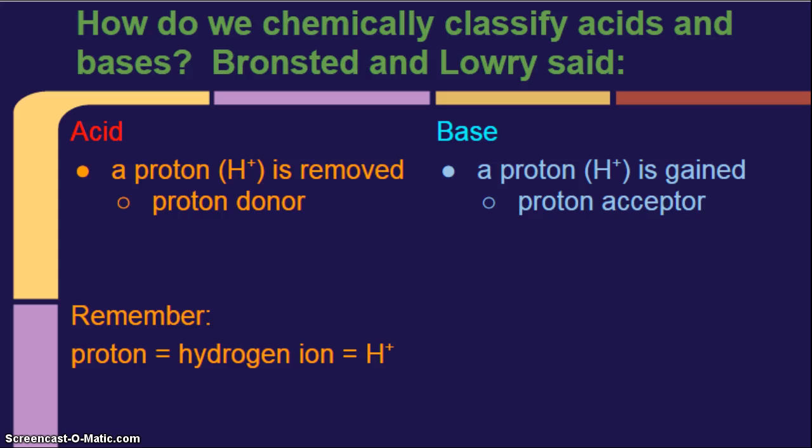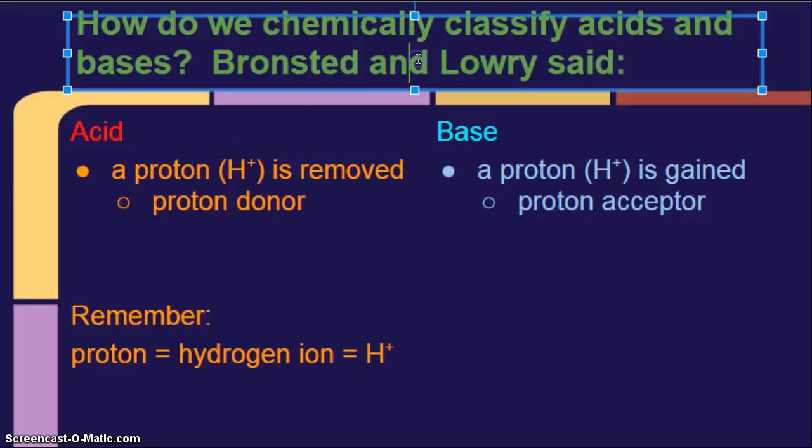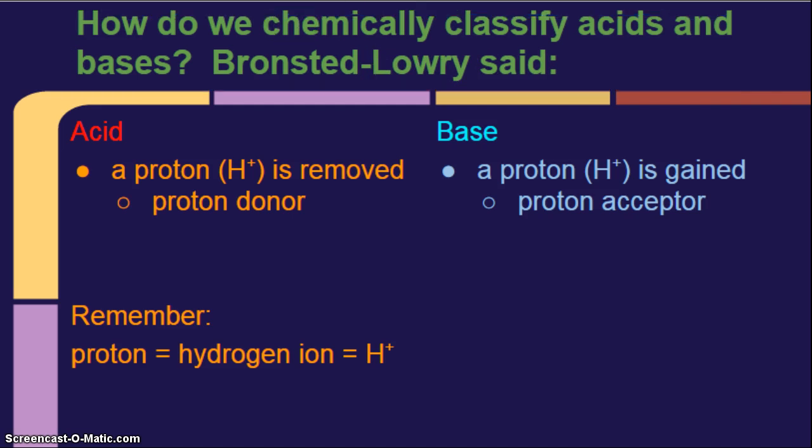So now we're going to go ahead to what Bronsted and Lowry said. Bronsted and Lowry were two separate scientists, but we combine it and say since they came up with the same idea at the same time in two different countries, they both get credit. Bronsted and Lowry both said an acid is a proton, which is an H+, is removed. Therefore, we call it a proton donor.